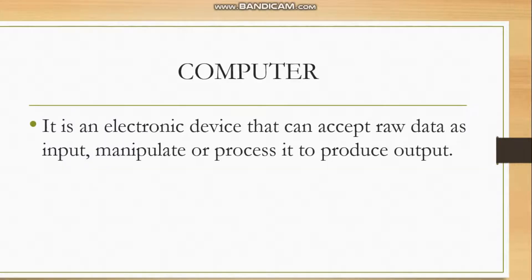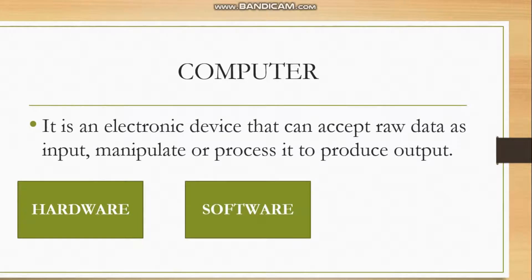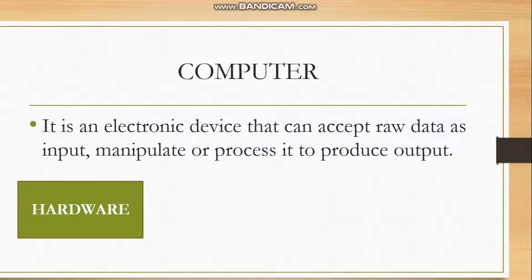What is a computer? A computer is an electronic device that can accept raw data as input, manipulate, or process it to produce output. A computer system consists of hardware, software, and peopleware. Hardware refers to the tangible component of the computer system — for example, a monitor, keyboard, mouse, webcam, USB flash drive, speaker, headset, microphone, or printer.